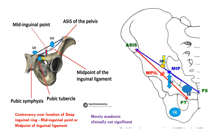The deep inguinal ring is located around one to two centimeters above the midpoint of the inguinal ligament. There are controversies over the exact location — some authors claim it is at the mid-inguinal point, others say it is at the midpoint of the inguinal ligament — but clinically, the distinction is of little clinical significance; it is mainly academic.